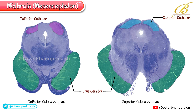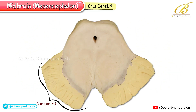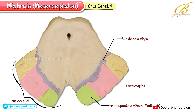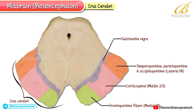Let's note a few specifics about the crus cerebrae, the ventral base of the midbrain lying in front of the substantia nigra. It's divided into three segments: the medial one-sixth contains frontopontine fibers; the middle two-thirds carries the main corticospinal, corticobulbar, and corticonuclear tracts; and the lateral one-sixth includes temporopontine, parietopontine, and occipitopontine fibers.